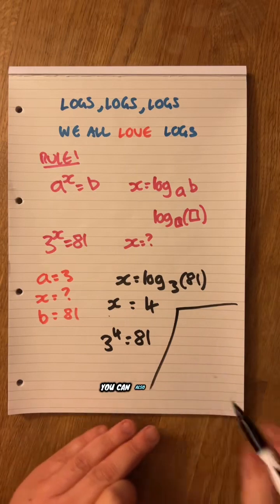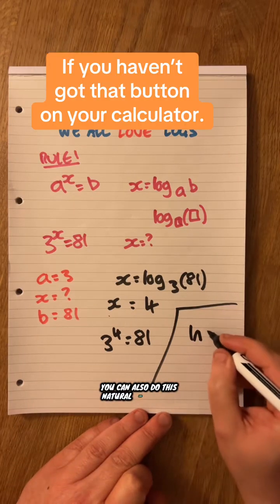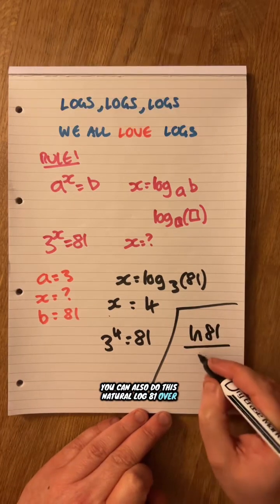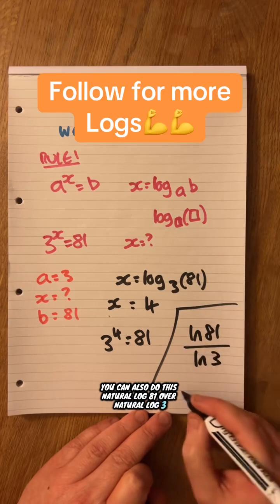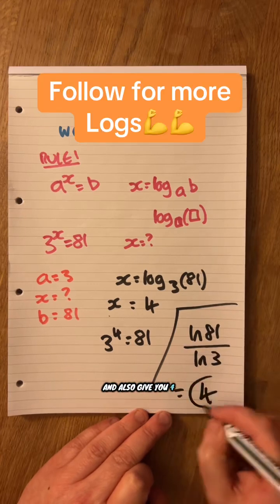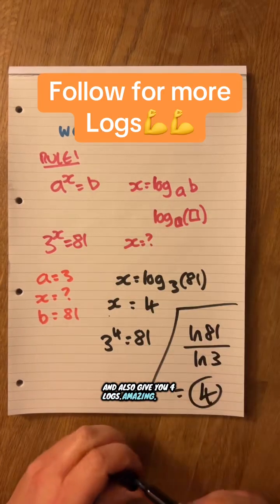That's one way of doing it. You could also do this. Natural log 81 over natural log 3. It'll also give you 4. Logs, amazing. More coming.